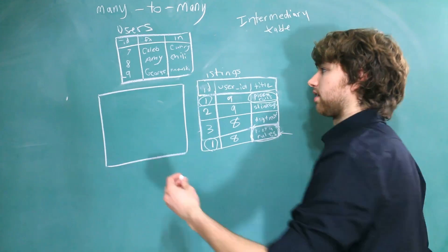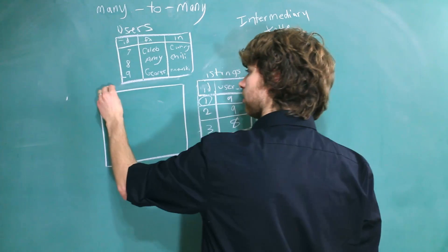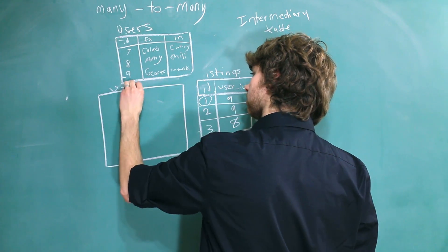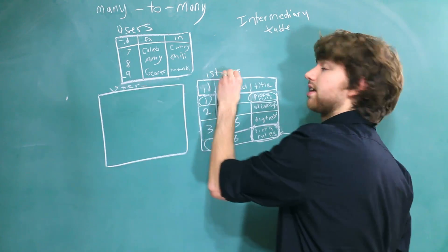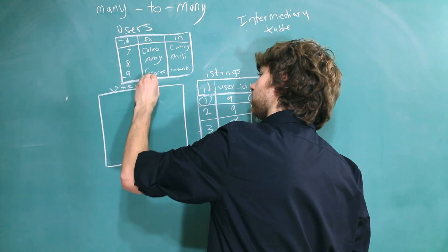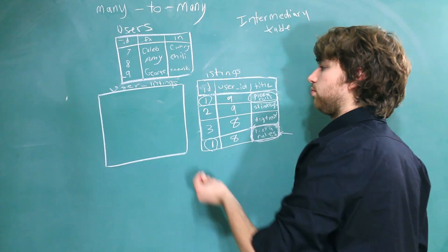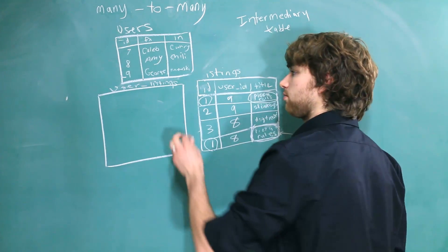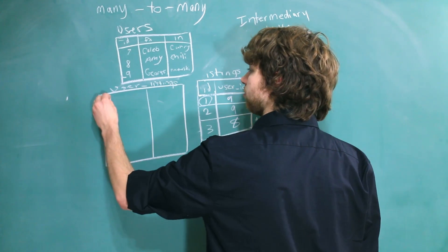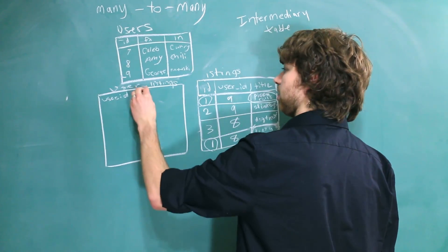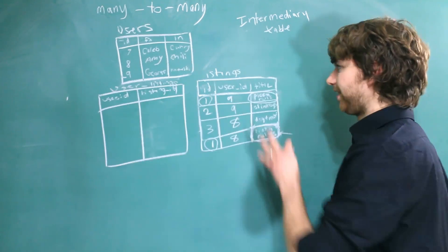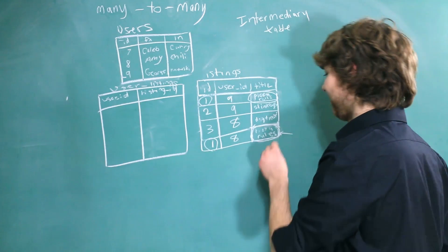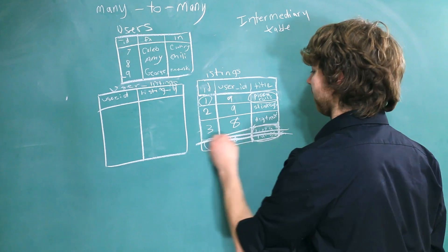Now this table, by convention, is going to have the first table, singular. So user, underscore, the second table, plural, listings. And this is going to make associations from the users to the listings. So the only columns we really need in here are the user ID and the listing ID. Now let's fix up this crap. First, let's get rid of that row. We don't want that at all. And then I'll put this up here so we know that we want to put two of those over here.